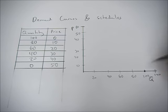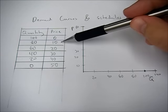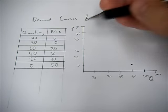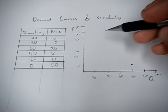We'll find that spot and make a dot. Price of 10, we only demand 80. So 10 and 80. Price of 20, we're going to demand 60.